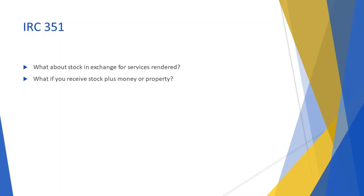What if you receive stock plus money or other property? If, in an otherwise non-taxable exchange, you also receive money or property other than stock, you may have to recognize a gain. You recognize gain only up to the amount of money plus the fair market value of the other property you receive. The rules for figuring the recognized gain generally follow those for a partially non-taxable like-kind exchange.